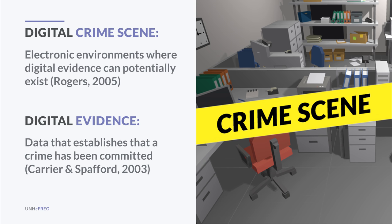A digital crime scene can be an actual digital crime scene on a server, or it could be a physical room that contains digital devices. What differentiates this area of forensics from other disciplines is that we could have a virtual crime scene in which digital evidence exists. The main thing is that digital evidence is data that establishes a crime has been committed — it can provide a link between a crime and its victim, or between a crime and the perpetrator.